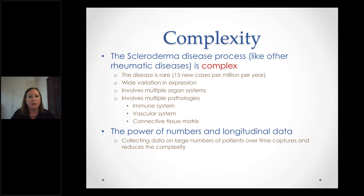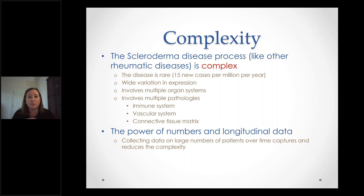I want to give you a little insight into how we as treating physicians think about scleroderma. The scleroderma disease process is complicated because it's rare, has pretty wide variation in how it expresses itself — one patient's scleroderma may look totally different from another's — and involves multiple different organ systems and pathologies: an immune or inflammation problem, a blood vessel or vascular problem, and a scarring or fibrosis problem.